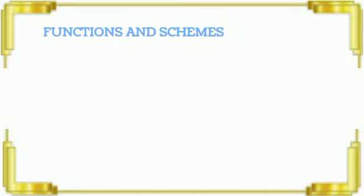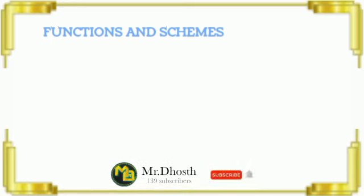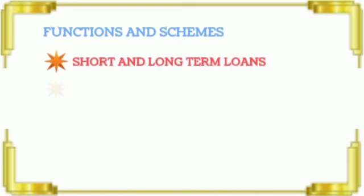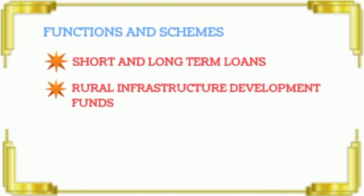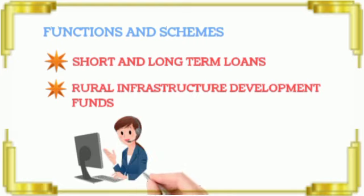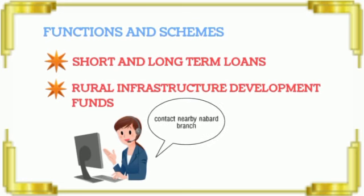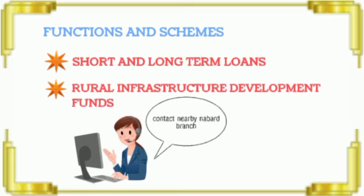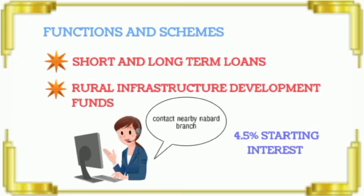What are the schemes and subsidies? NABARD offers short-term loans and long-term loans. There is also the Rural Infrastructure Development Fund (RIDF). You can send your loan application through your district bank to the NABARD branch. The loan interest starts from 4.5%.